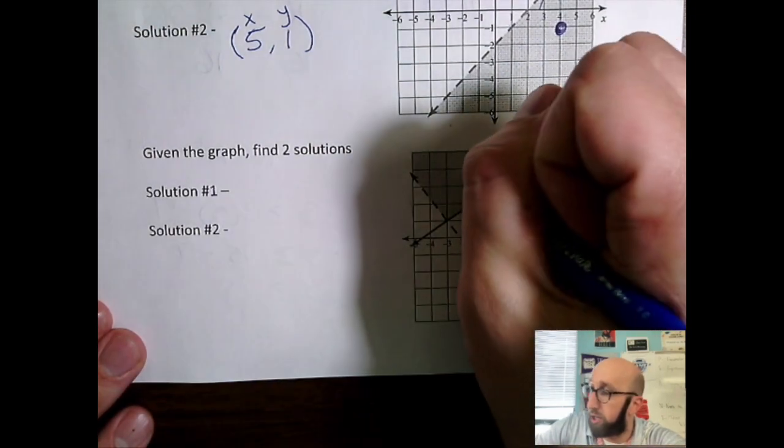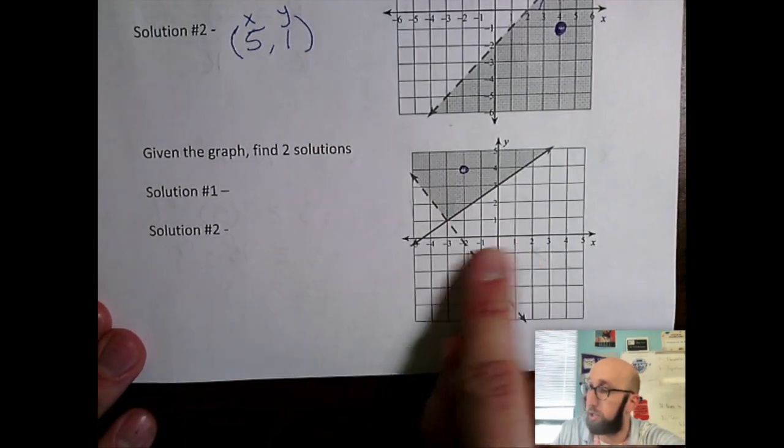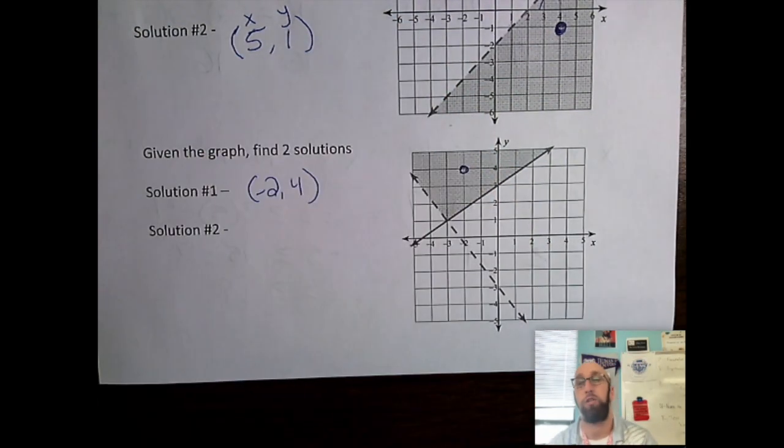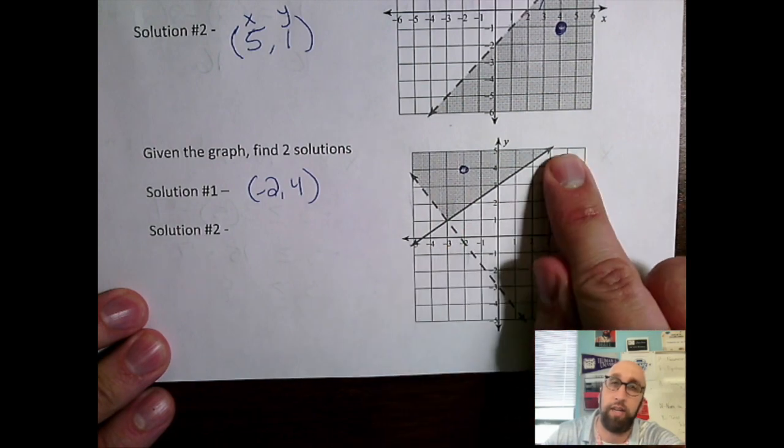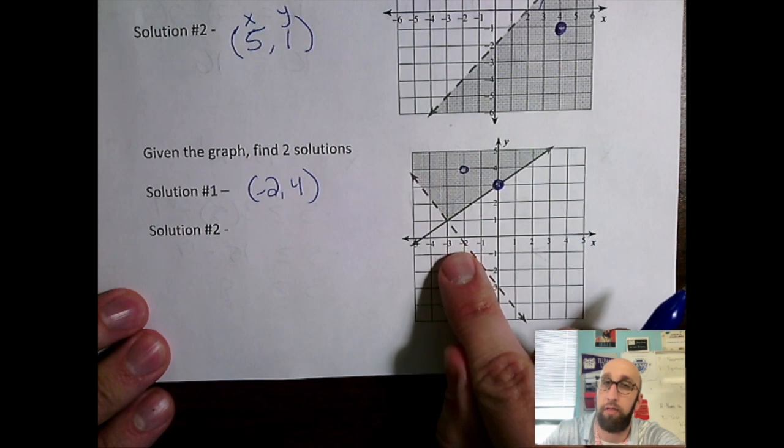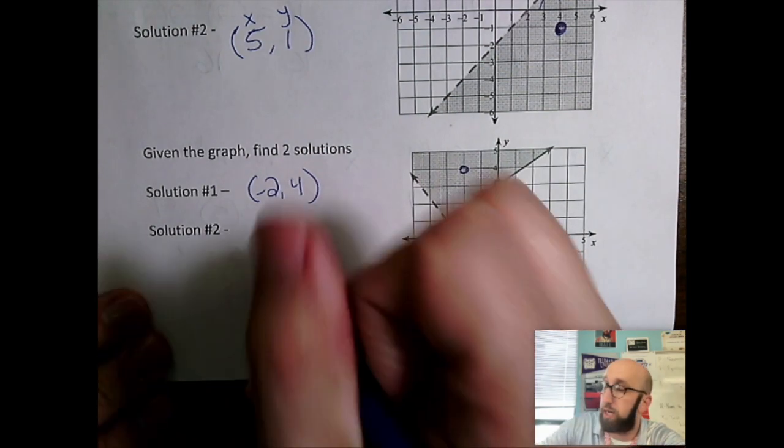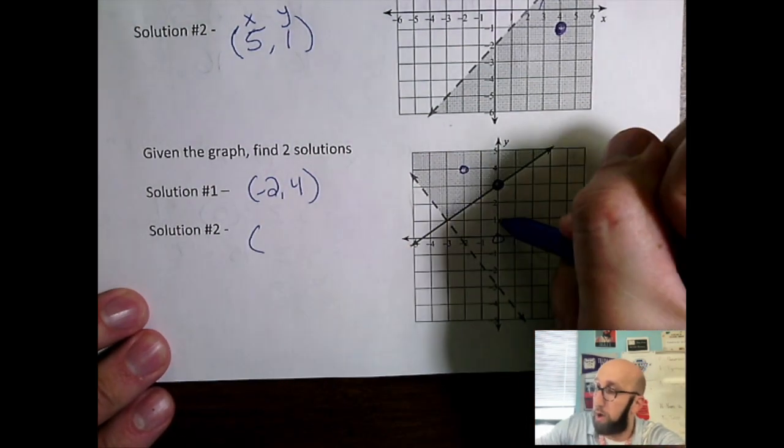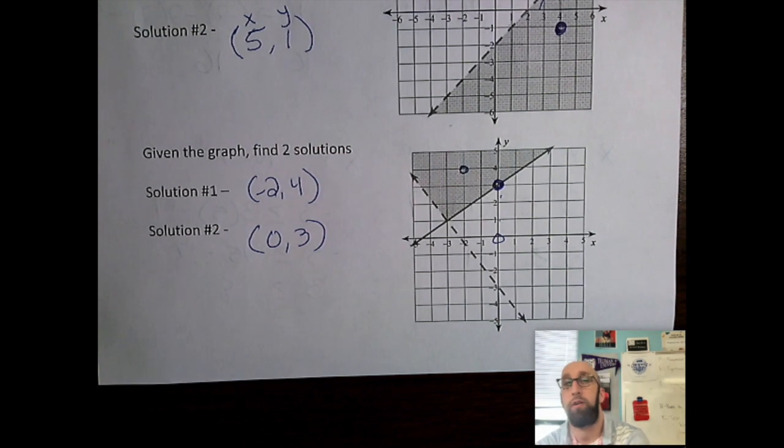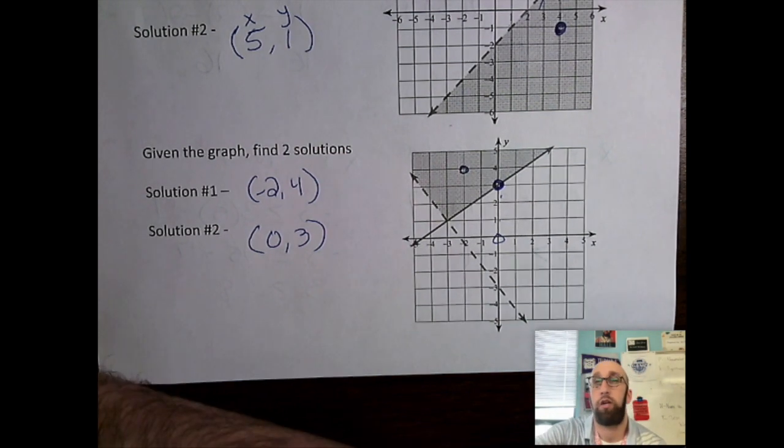If you're in the shaded area, that counts as a solution. So this coordinate is (-2, 4) - that is a solution. Anywhere in that shaded area will work. I'm going to give you one more solution here. Notice how I have this solid line here. I can pick out points on the solid line but not on the dashed line. Solid line yes, dashed line no. The coordinates there - the x value is 0 but the y value is 3. So that was a very brief video on how to find solutions graphically.